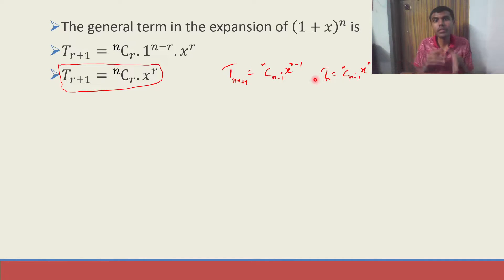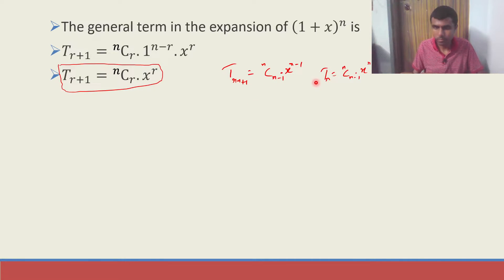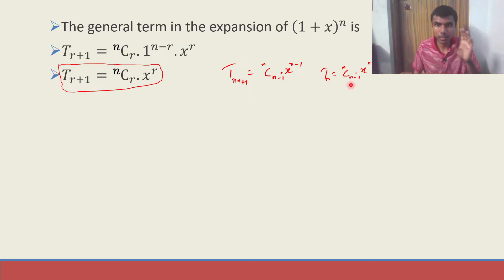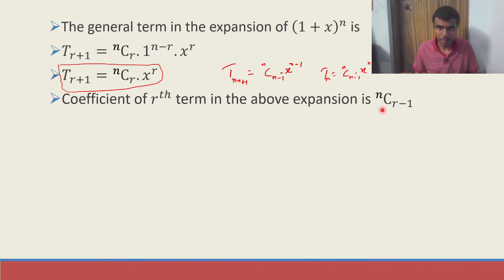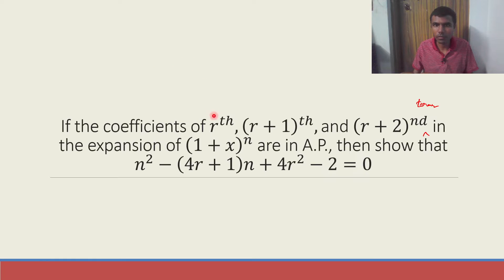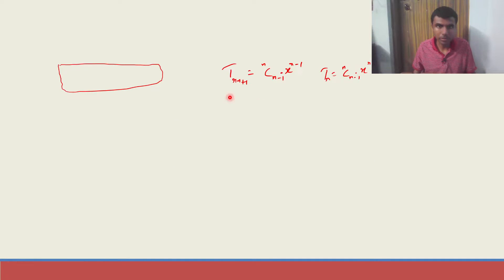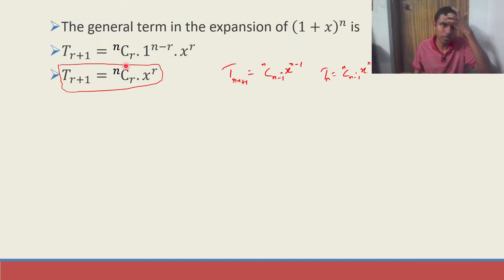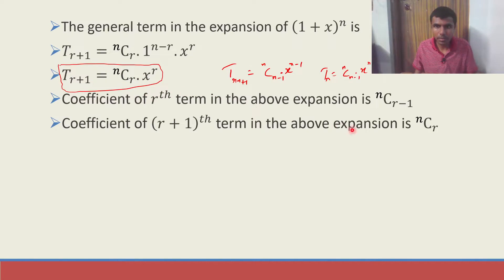The coefficient of the rth term in the expansion is nC(r−1). Now, the (r+1)th term — that is actually our general formula directly — so its coefficient is nCr. The coefficient of the (r+1)th term in the expansion is nCr.